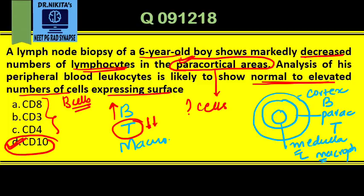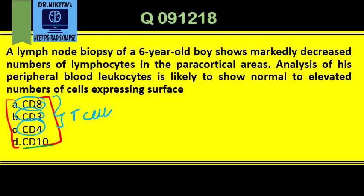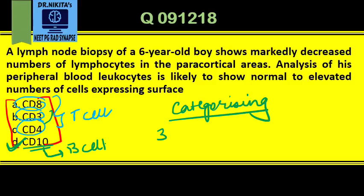If you don't know which cells predominate in the paracortical areas, here's the trick: look at the options and try to categorize the CD markers into two groups — is there a feature that puts three options in one group and one in the other? Here, CD8, CD3, and CD4 are all T cell markers, while CD10 is the only B cell marker. Three options fall on one side, and the fourth on the other — so you can take a logical guess and mark CD10.